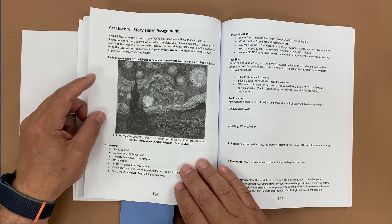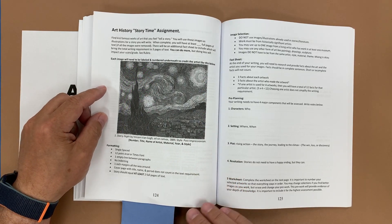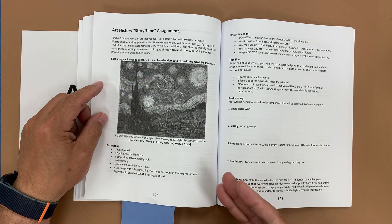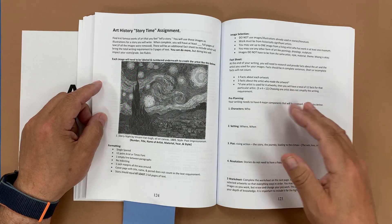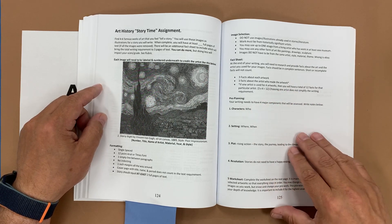We have an art history storytime assignment where students could find four major works of art and use those as illustrations for a story they would write.